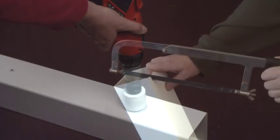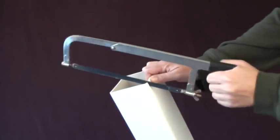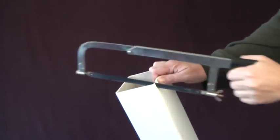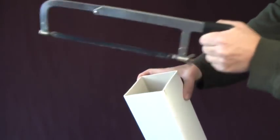Use your hacksaw and cut about a half inch to three-quarter inch slit on the drain end of the fence post.